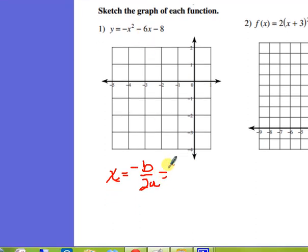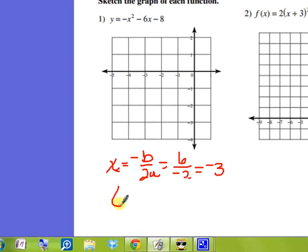When I plug in negative 6 and then negate it, it actually becomes a positive 6. Then 2 times negative 1 is going to be negative 2. So this is going to equal negative 3, and that gives me my first value of that vertex.